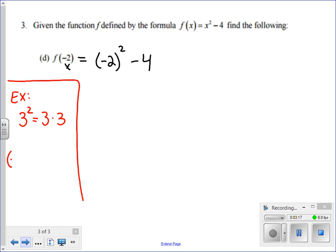So when I have negative 2 squared, that's negative 2 times negative 2. And a negative times a negative equals a positive. And we have positive 4. Negative 2 times negative 2 is positive 4.